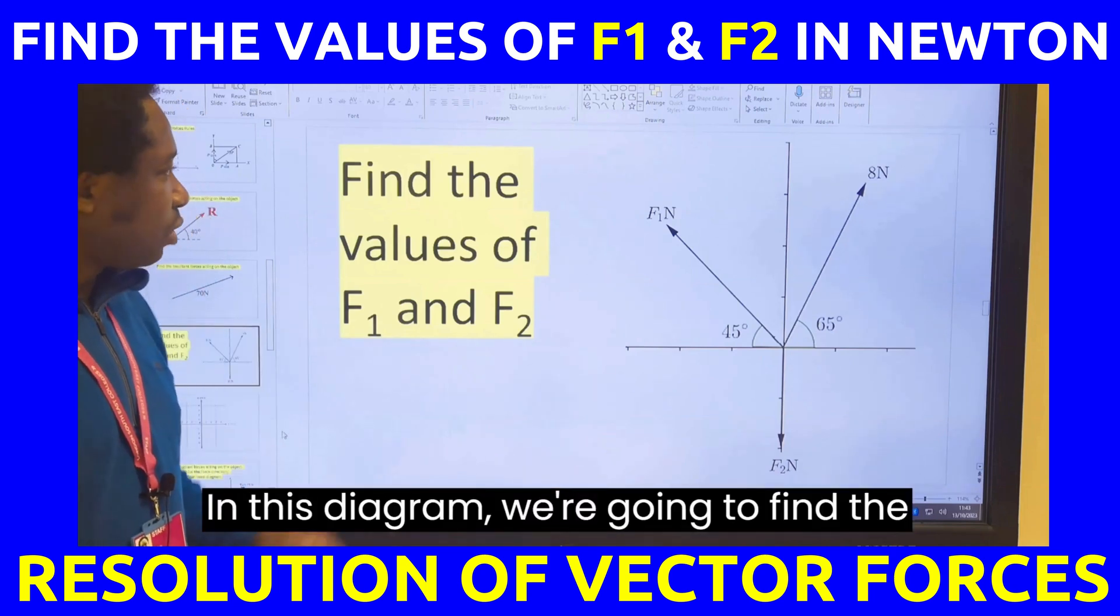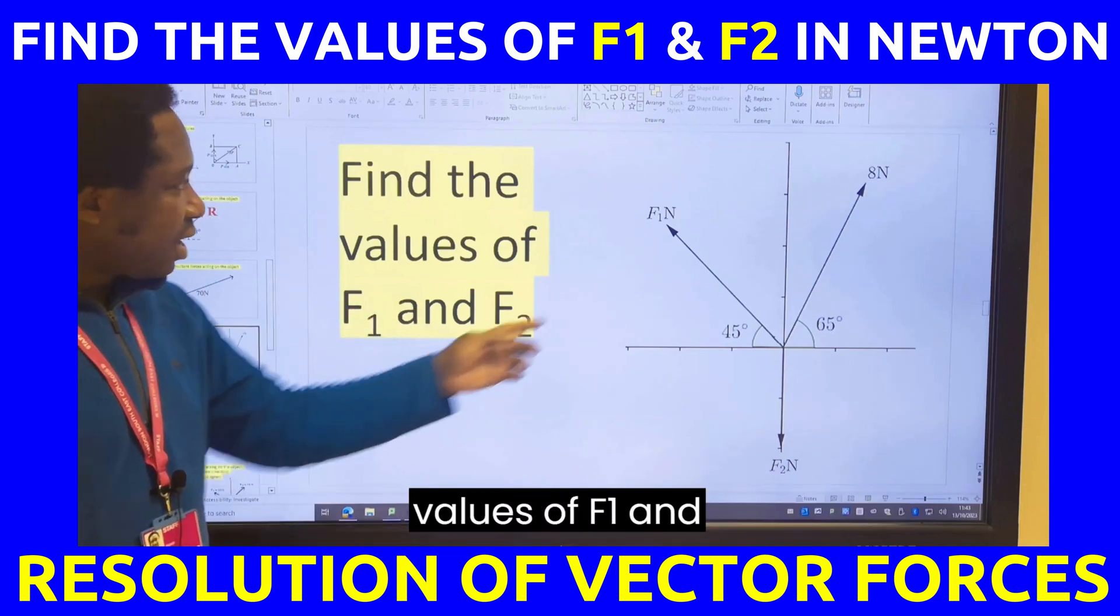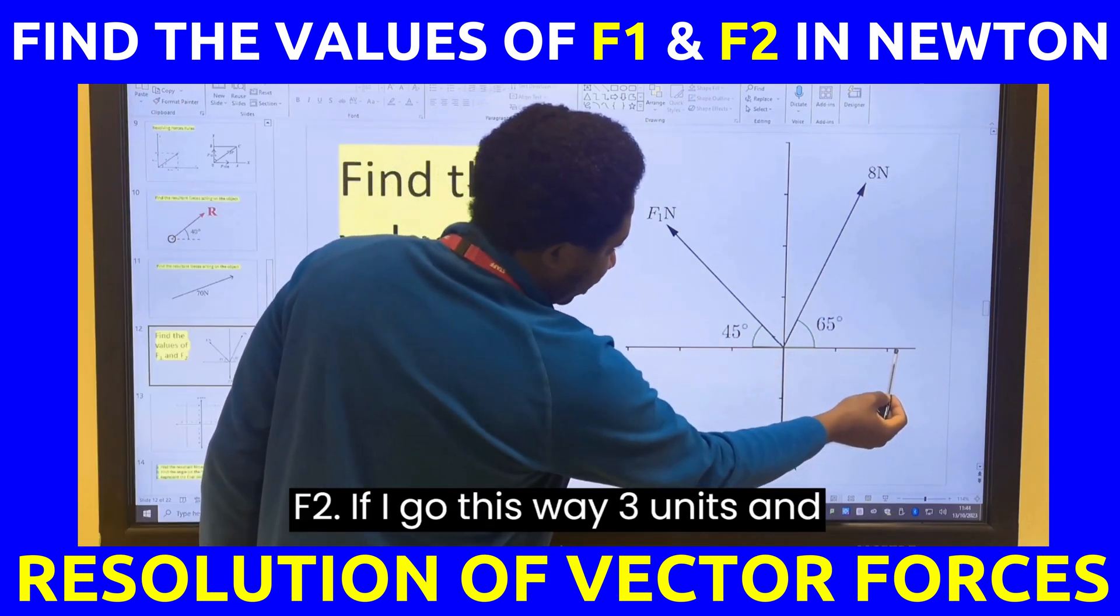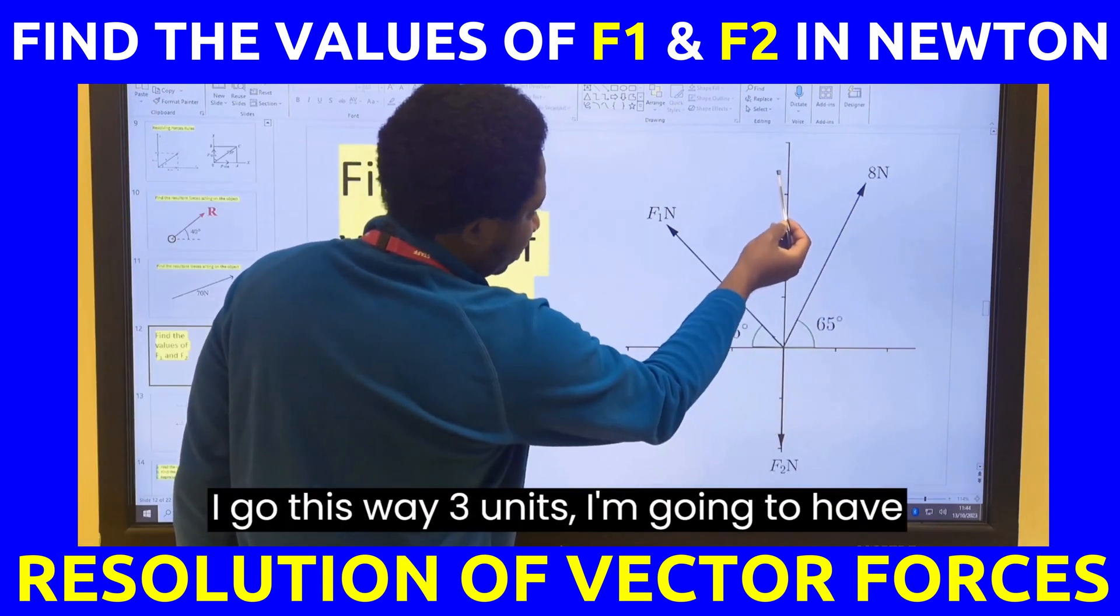In this diagram, we're going to find the values of F1 and F2. If I go this way 3 units and I go this way 3 units, I'm going to have this point to draw this vector.